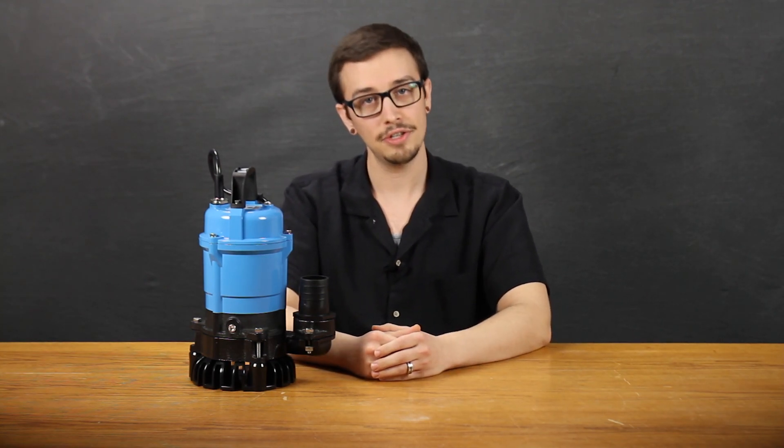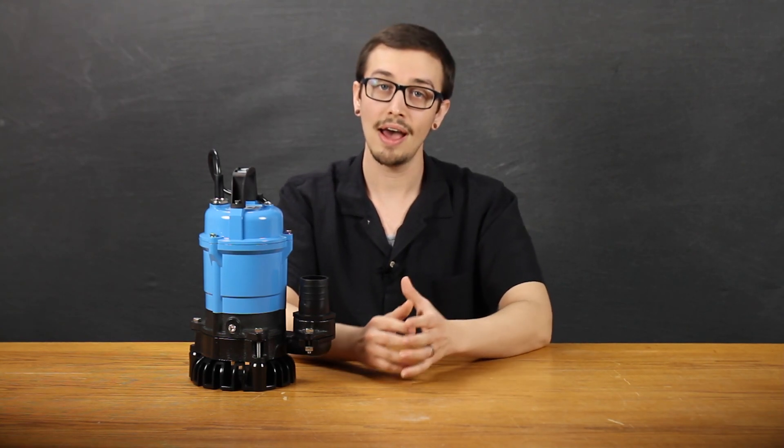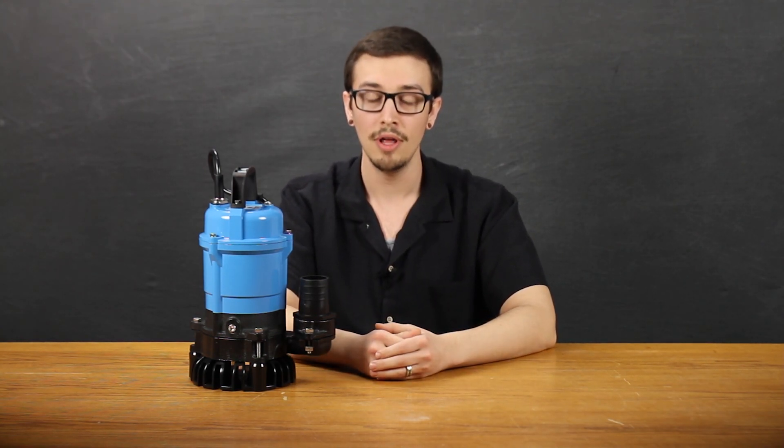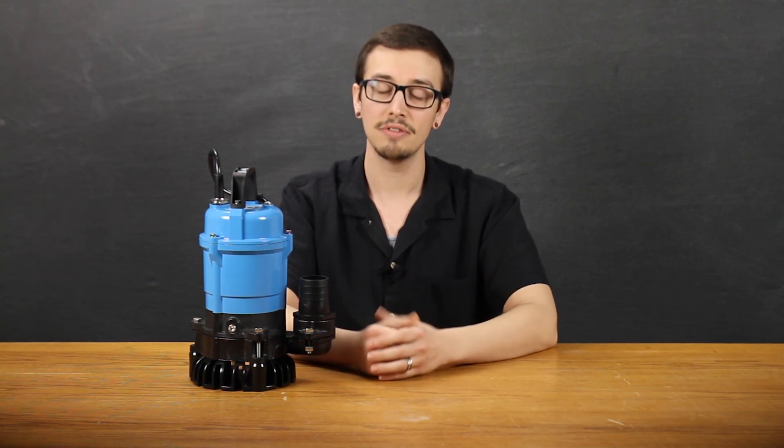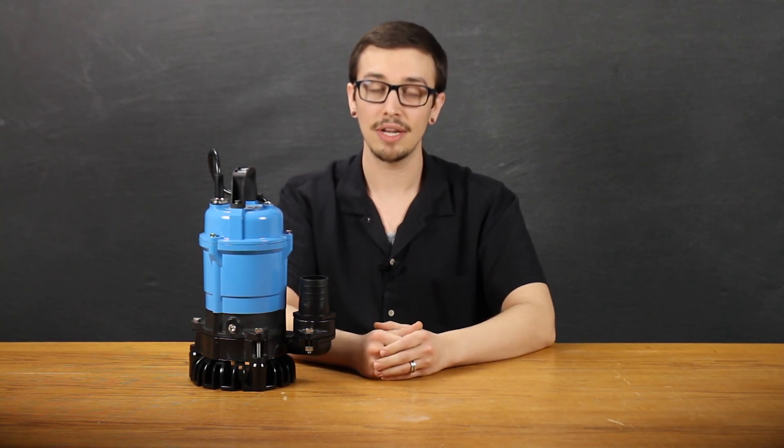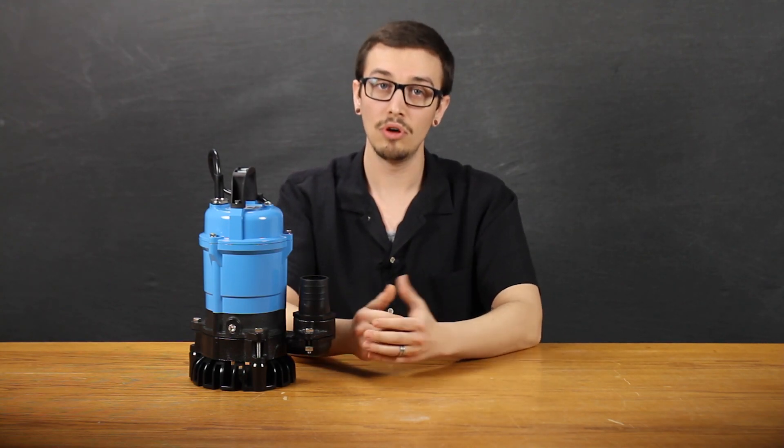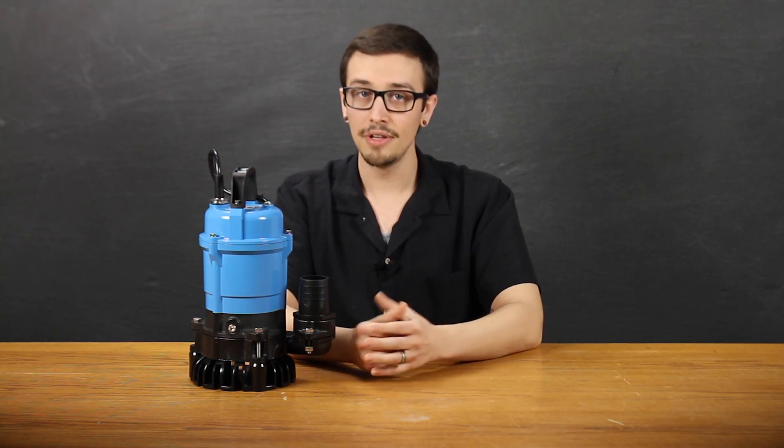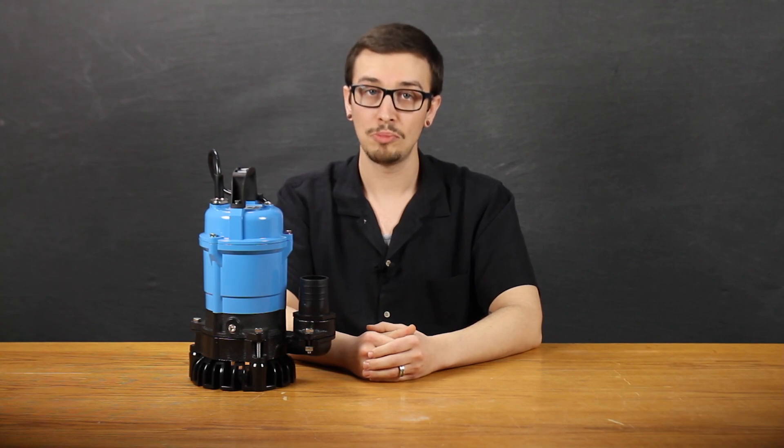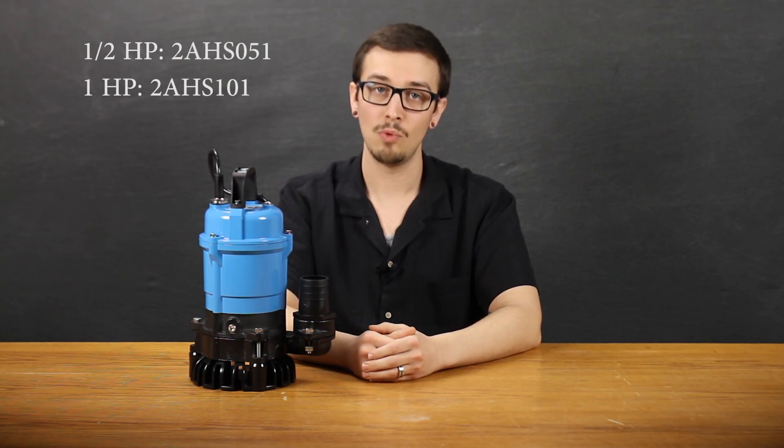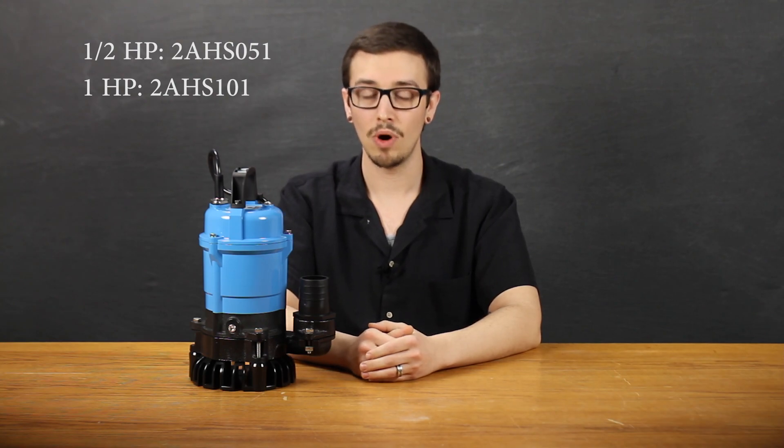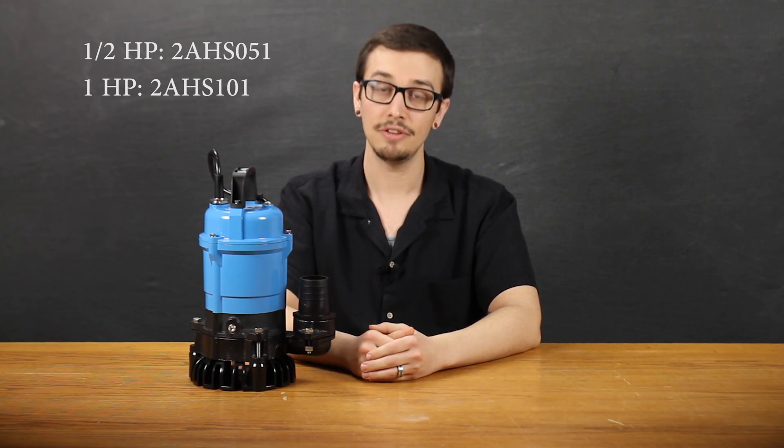The Bar Mesa 2AHS series boasts either a one-half or one-horsepower motor, but is only offered in a standard 120 volt single phase configuration, and is rated at 6 or 12 full load amps, respectively. The model number for the half or one-horsepower configuration is signified by either a 051 or 101 after the 2AHS.